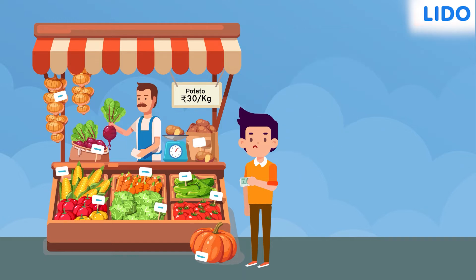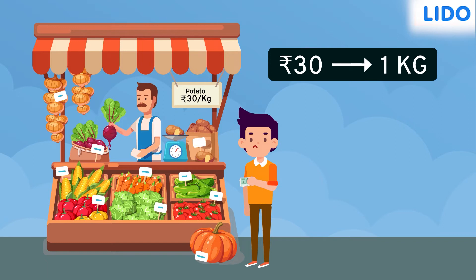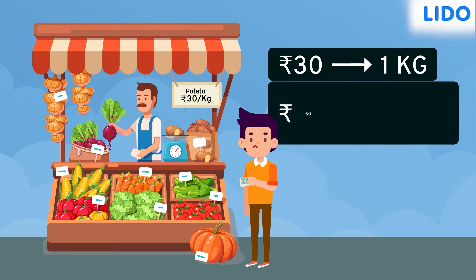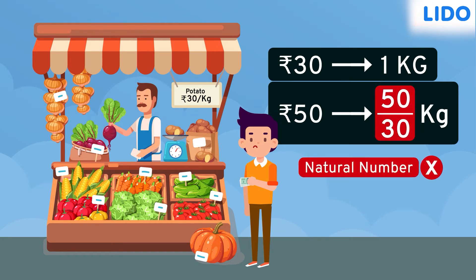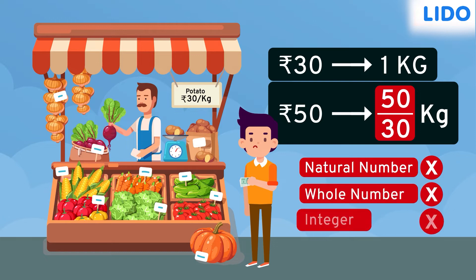Well, if for 30 rupees Ian can buy 1 kg of potatoes, then for 50 rupees he'll get 50 divided by 30 kg of potatoes. Now, 50 divided by 30 is not a natural number, whole number, or an integer. What is it then?